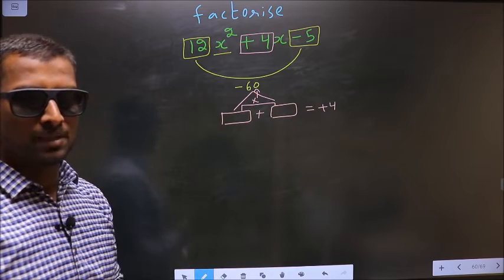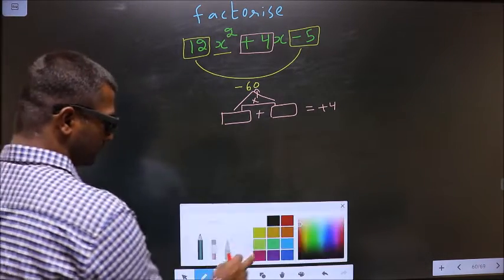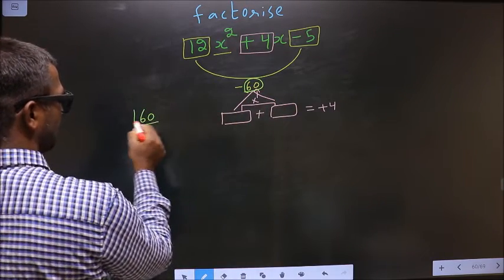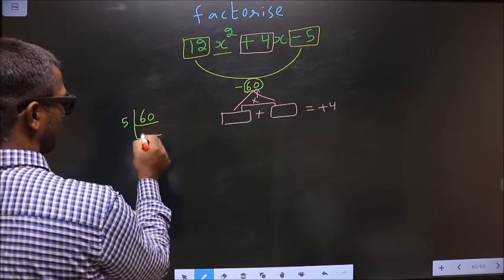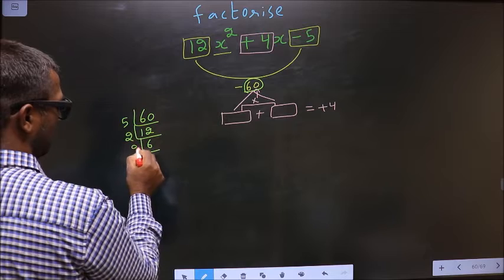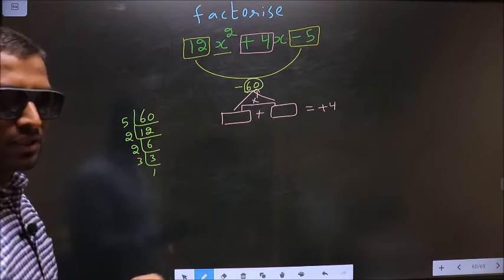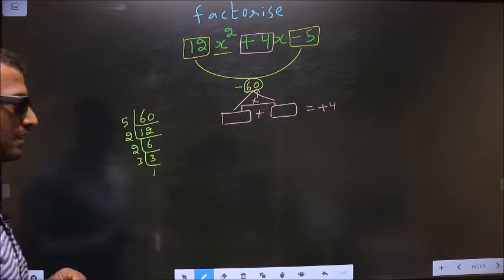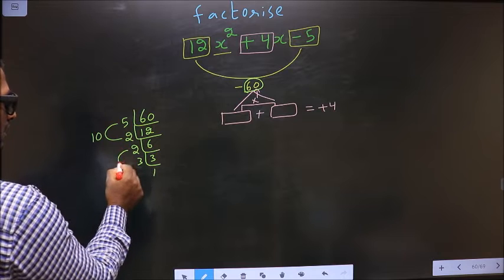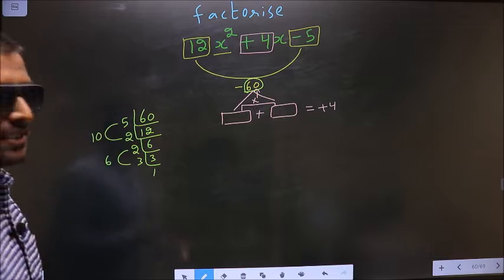To get those 2 numbers we should take LCM of 60. So I start with 5. 5, 1s, 5, 2s now 2, 6. Now again 2, 3, 3 and 1. Now the 2 numbers should be 5 into 2, 10; 2 into 3, 6. 10 minus 6 is 4, 10 into 6 is 60. So here 10 and here 6.